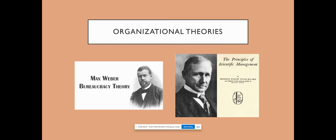Under Weber's bureaucracy theory, scientific management is a theory of management that analyzes and synthesizes workflows. Its main objective is improving economic efficiency, especially the productivity of labor. Scientific management is a systematic approach as compared to a rule of thumb or trial and error approach. It applies not just a set of techniques for improving efficiency, but substitution of exact scientific investigation and knowledge for individual judgment in all matters undertaken by a business. Scientific management means knowing exactly what you want men to do and seeing that they do it in the best and cheapest way possible.